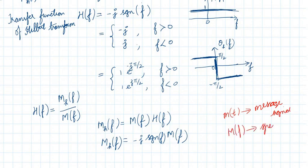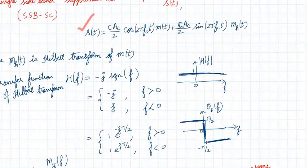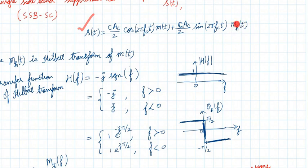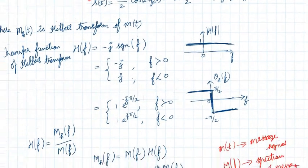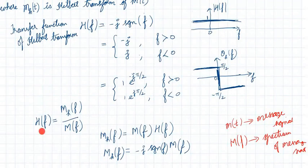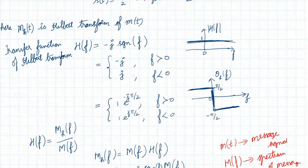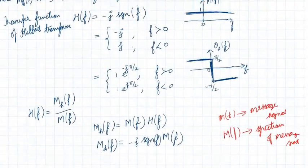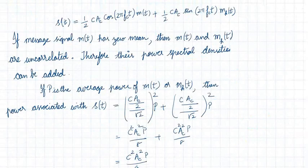M_H(f) is obtained by multiplying the message signal spectrum M(f) by H(f). Here m(t) is the message signal and M(f) is its spectrum — the frequency component of the message signal. This gives us the standard expression for the SSB-SC signal containing both the message component and its Hilbert transform.